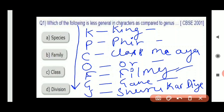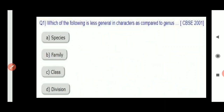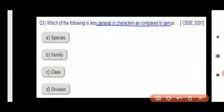Coming back to the question: which of the following is less general in character? I told you that when we move from Kingdom to Species, our specificity increases. Specific characters come in as we reach species level.